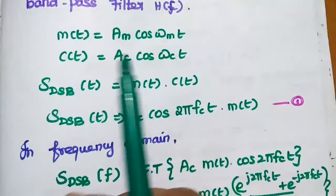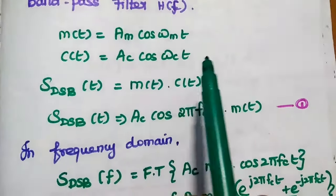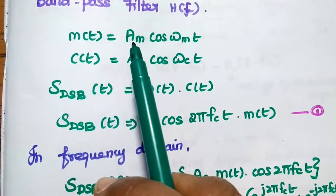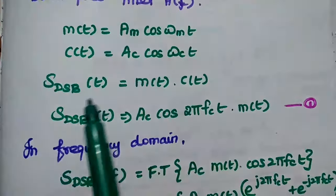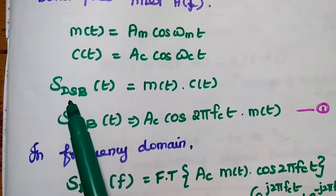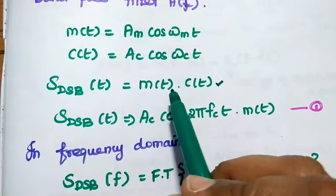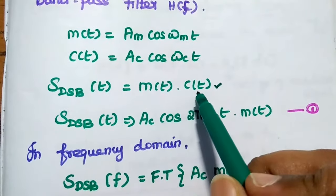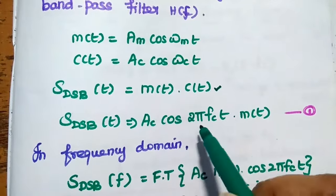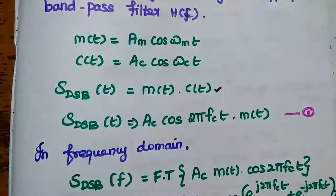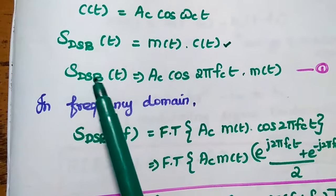Let's analyze the signal in terms of the time domain. The message signal M(T) is AM cos(ωM·T). The carrier signal C(T) equals AC cos(ωC·T), where AM is the amplitude of the modulating signal, ωM is the angular frequency of the modulating signal, AC is the amplitude of the carrier signal, and ωC is the carrier angular frequency. After the product modulator, we get the double sideband signal: DSB(T) = M(T) × C(T) = M(T) × AC cos(2πFC·T). This is the first equation — the output of the product modulator which has two sidebands, called the double sideband system.